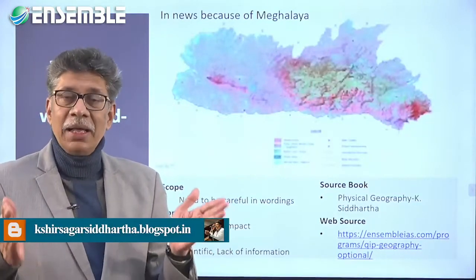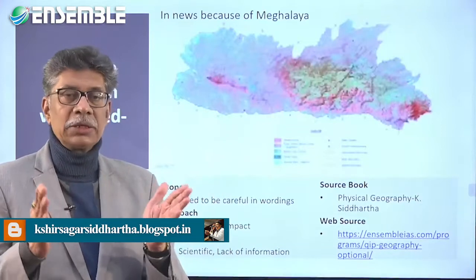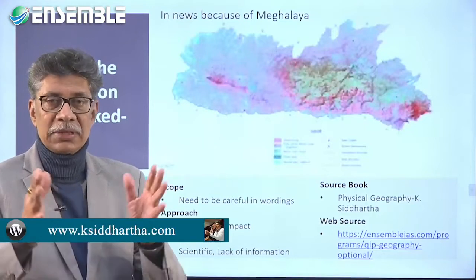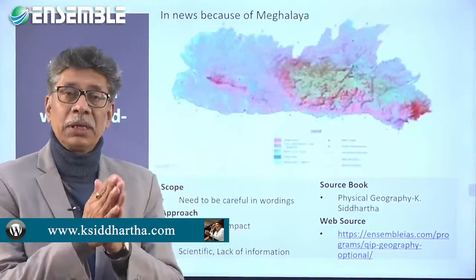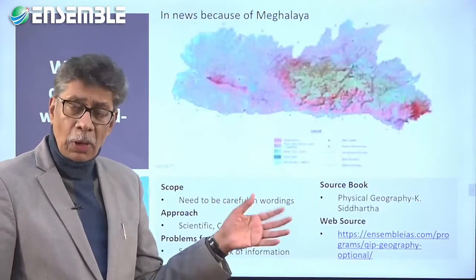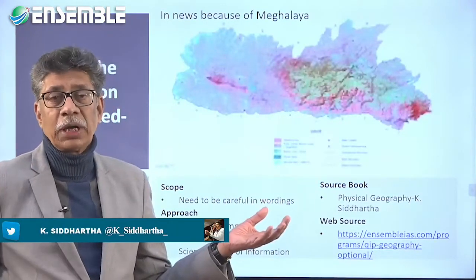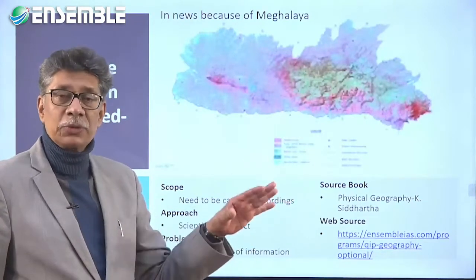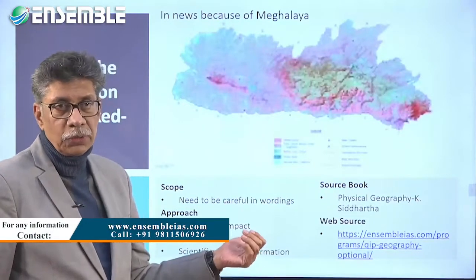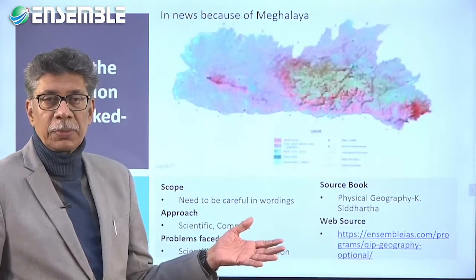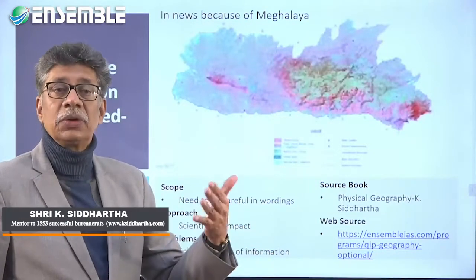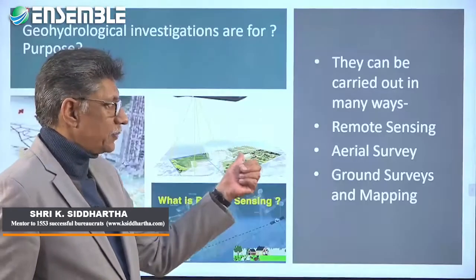The second point is scope — you have to be careful with your words because it is about explaining. If the language is compact and scientific, it makes it easy, but the language can become too condensed. In this case, the approach has to be scientific and compact. You cannot write too much because the topic itself is explanatory. The two problems you face are a lack of information on this topic and how to present it effectively.